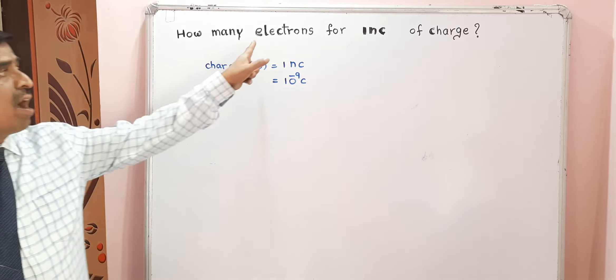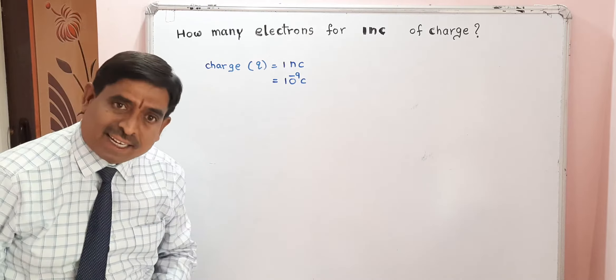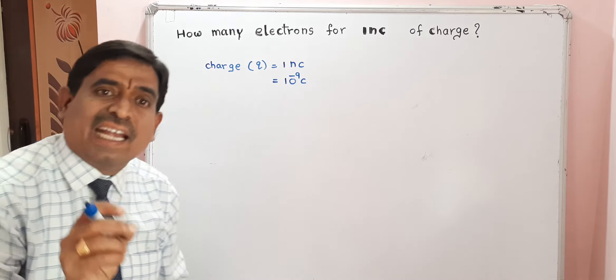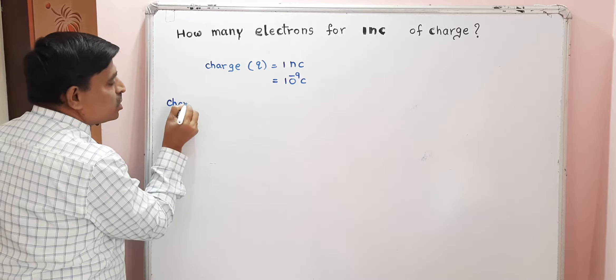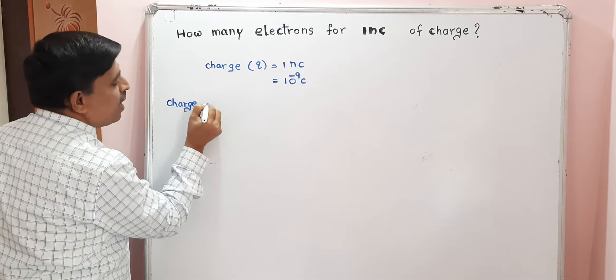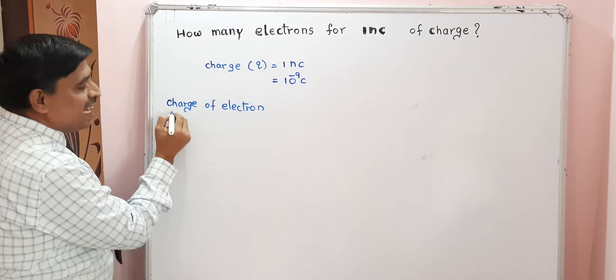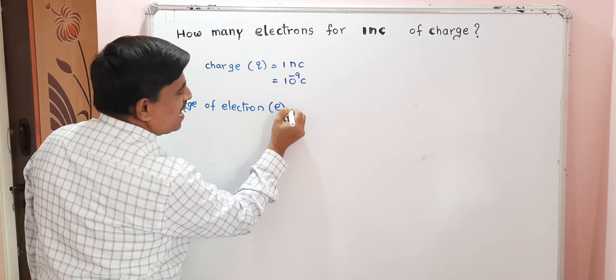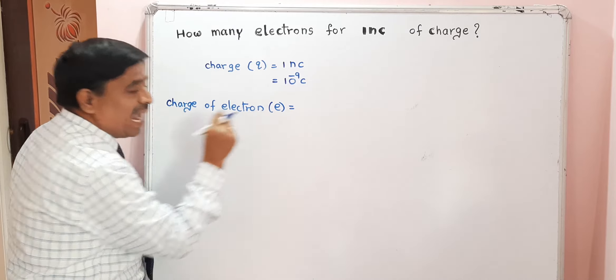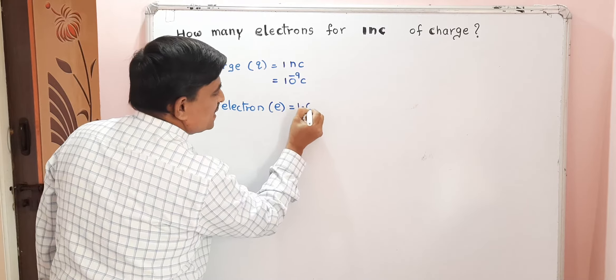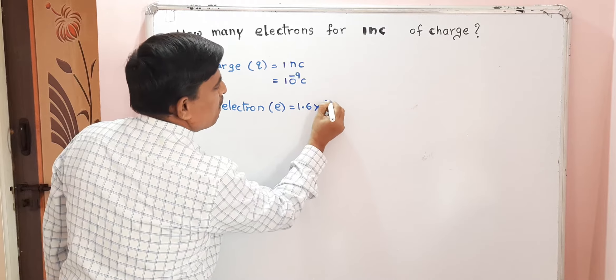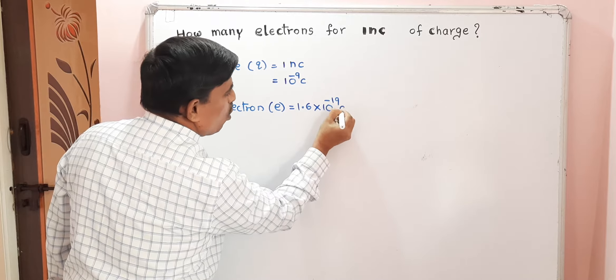Here, we are talking about electrons. We need the charge on the electron. The charge of electron is represented by E, and the charge of electron is 1.6 into 10 power minus 19 coulomb.